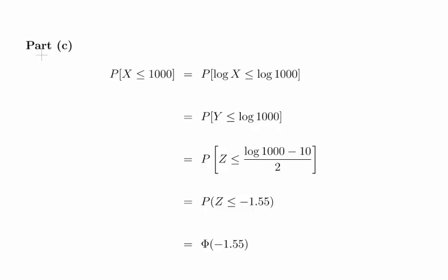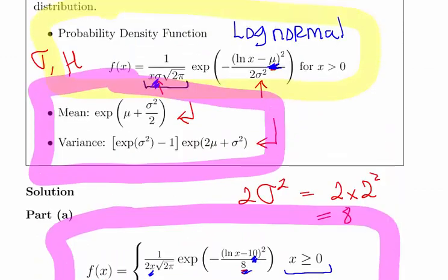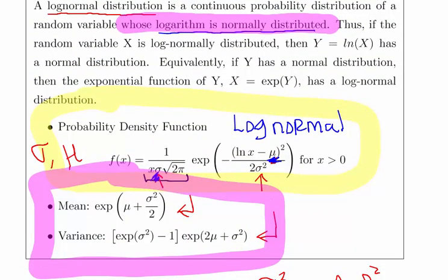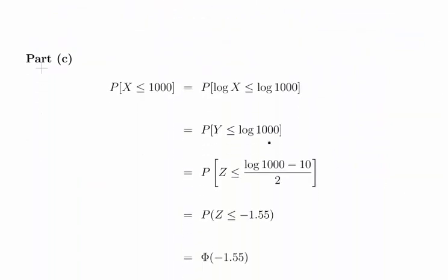In the last part we're asked for the probability of X less than or equal to 1000. That's tricky. We're not really given any guidance here about how to do probability calculations, but we know that we can express things in terms of the logarithm. So the probability of X being less than 1000 is equal to the probability of log of X being less than log of 1000. We know that the log of X is Y, and we know that it's normally distributed, so we can turn this into a normal distribution question.